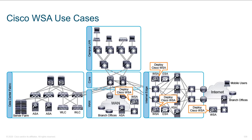WSA use cases include branch offices, headquarters, or co-location facilities where you're steering traffic in for scanning. Alternatively, Cisco has a cloud-based solution called ScanSafe for passing web traffic through, so if you don't host the WSA hardware, you can get very similar capabilities from the cloud by licensing the service from Cisco. Cisco maintains data centers globally, so as users travel around the globe, they can always access a close, reliable proxy.